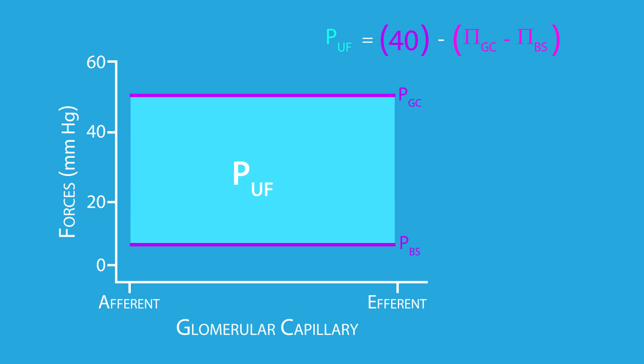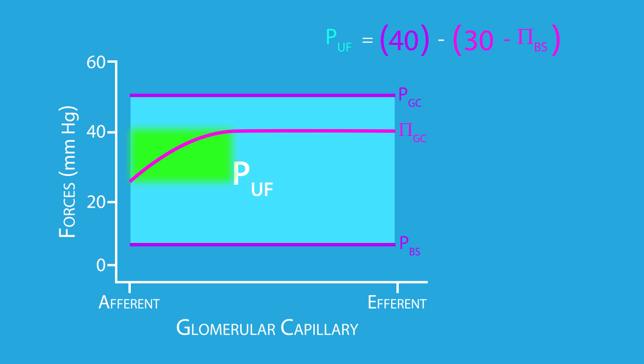The glomerular capillary colloid osmotic pressure starts off around 25 millimeters of mercury near the afferent end and increases to about 40 millimeters of mercury near the efferent end, yielding an average pressure between 30 and 35 millimeters of mercury. This increase occurs because as fluid is filtered, the plasma proteins become more concentrated along the length of the capillary.